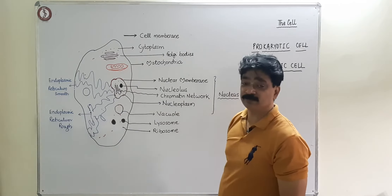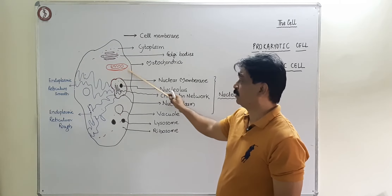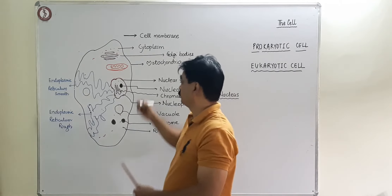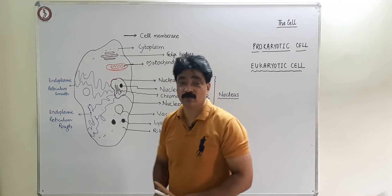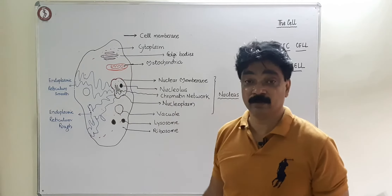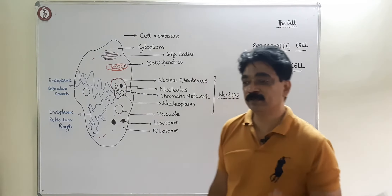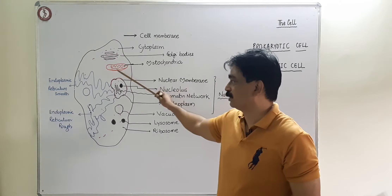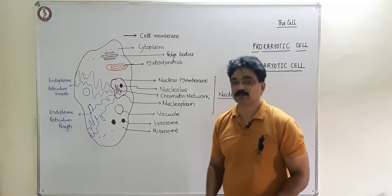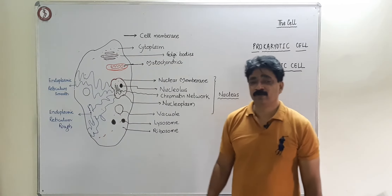So the cell membrane is most important, firstly for giving shape and size, and secondly for controlling exit and entry. Then there is the cytoplasm — it is the ground material in which other organelles float, the fluid inside the cell. Then there is the mitochondria, which is a very important structure. Oxygen comes in, goes inside the mitochondria, burns food through a food-burning process, and we get energy.